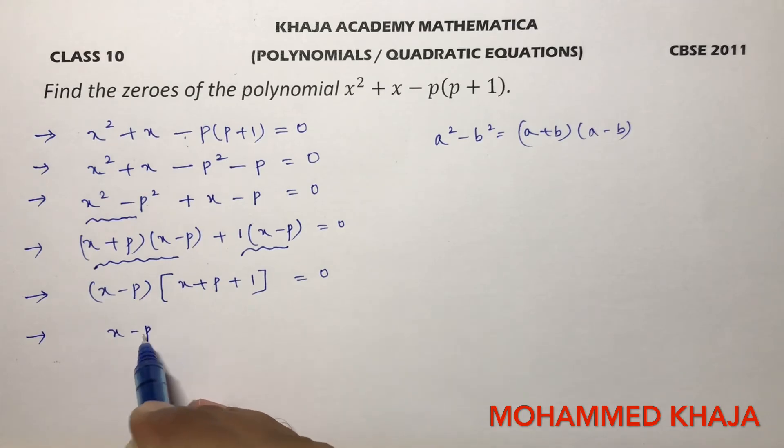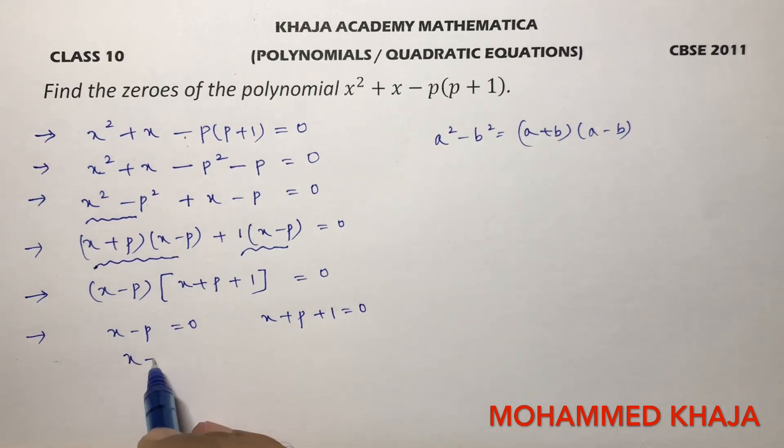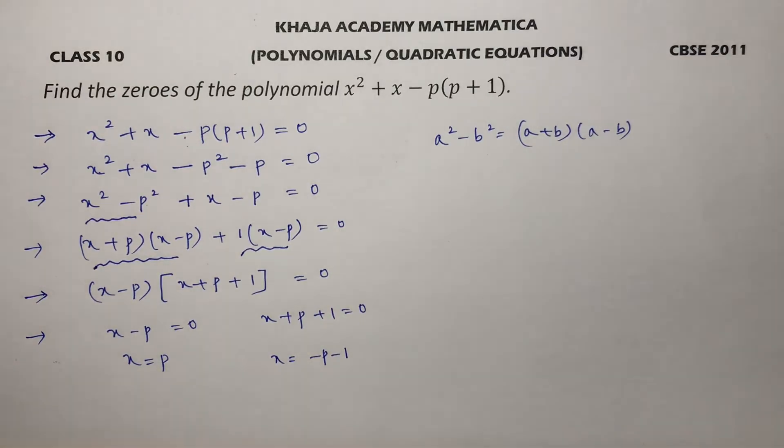So x equals p. Here if we transpose plus p it will become minus p, plus 1 will become minus 1. So the two zeros are p and minus p minus 1.